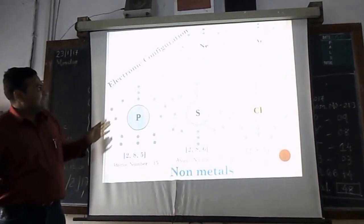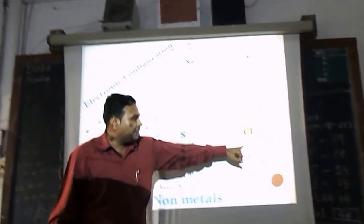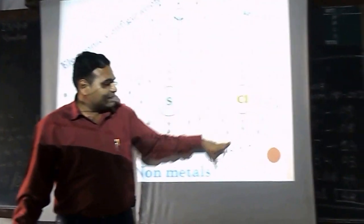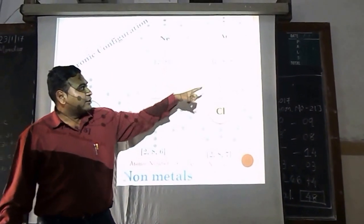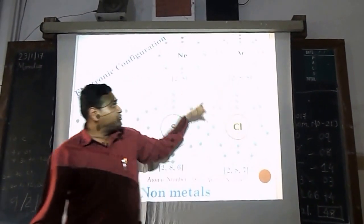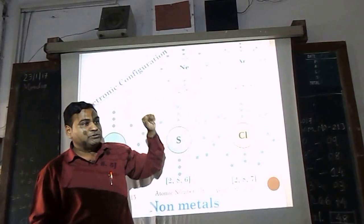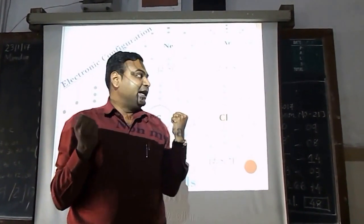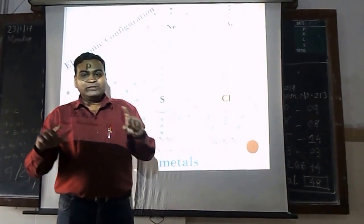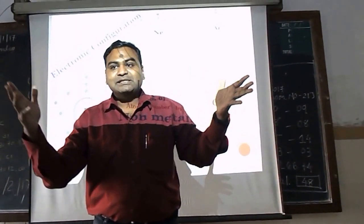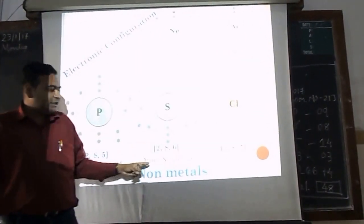Now let's move further and look at the electronic configuration of phosphorus, sulfur and chlorine. Starting with chlorine: it has atomic number 17 and electronic configuration 2-8-7. It needs to gain 1 electron to become like argon, or lose 7 electrons to become like neon. Since losing 7 electrons is not easy, it gains 1 electron and converts into Cl⁻. Elements that gain electrons and convert into negative ions are considered non-metals.